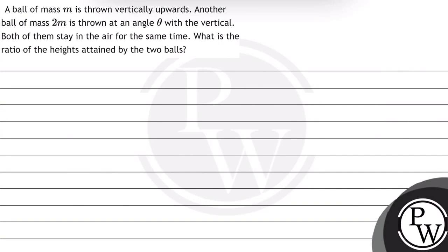Hello, let's read this question. A ball of mass m is thrown vertically upwards. Another ball of mass 2m is thrown at an angle theta with the vertical. Both of them stay in the air for the same time. What is the ratio of the height attained by the two balls?